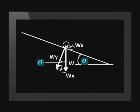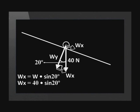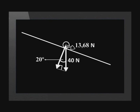The angle, theta, between the slope and the horizontal equals the angle between W and Wy. Wx is W sine theta. For this question, theta is 20 degrees. And W is 40 newtons. So Wx is 13.68 newtons down the slope. This means that 13.68 newtons of the weight's effect tends to accelerate the sled down the slope.